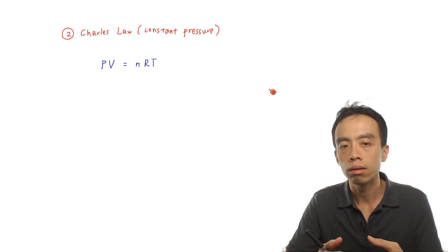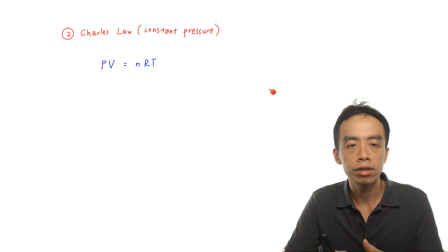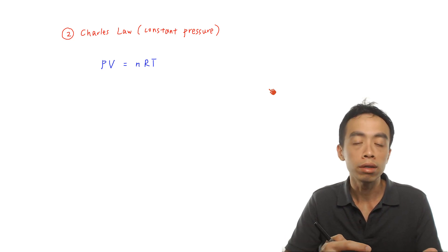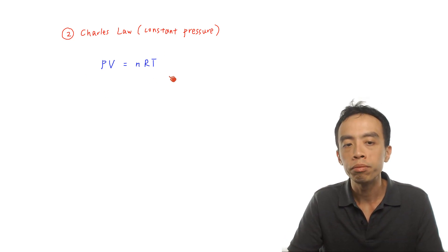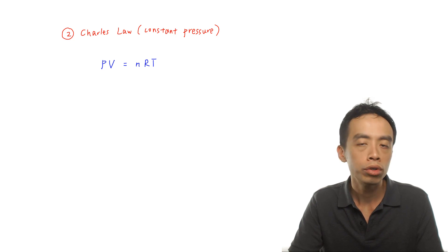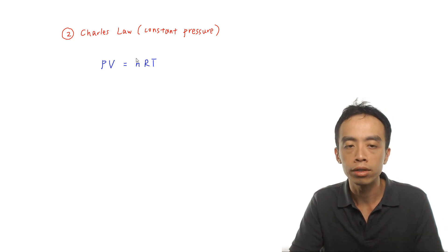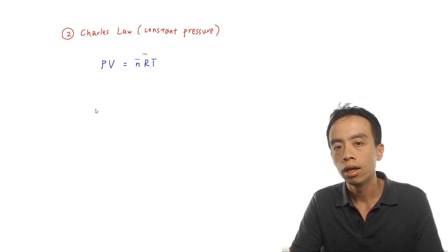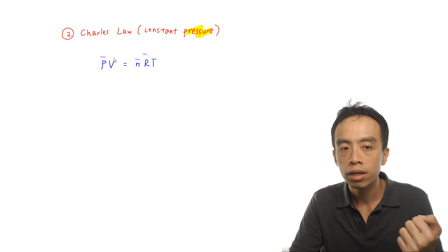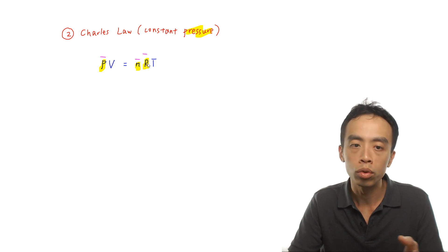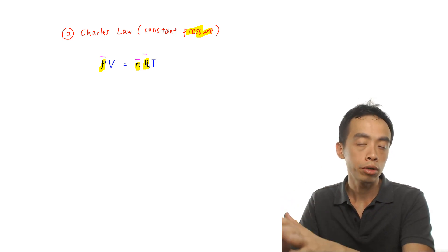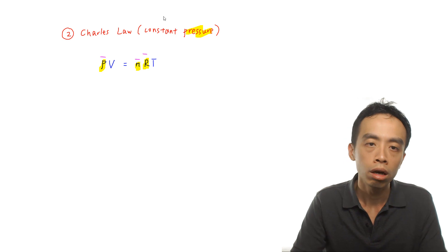Now let's look at another scenario where the pressure is constant — this is according to Charles's Law. If pressure is constant, we look out for all the terms that are constant. Usually the number of moles of gas stays constant, so n is constant. The gas constant R is obviously constant. And in this case, pressure P is also constant. So all the constant terms here are pressure, number of moles, and gas constant.